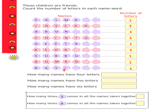Now R-A-V-I, that is Ravi. The number of letters is one, two, three, and four. Now the question is: how many names have four letters? Looking at what we've written, the names with four letters are Arun, Asha, and Ravi. So three names have four letters.